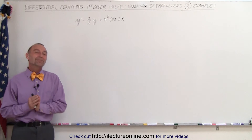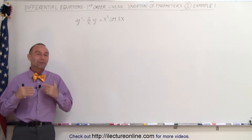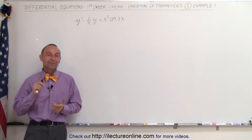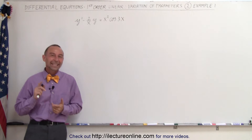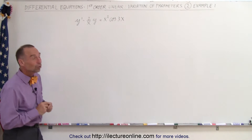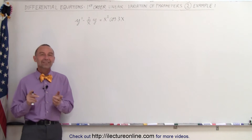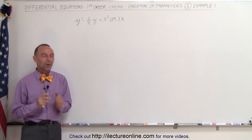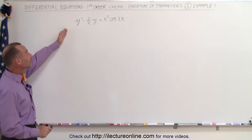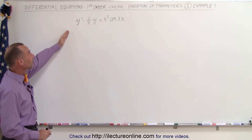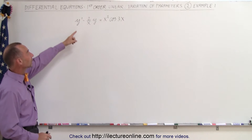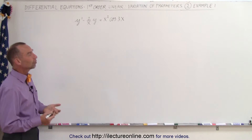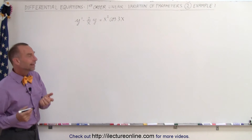Welcome to ElectronLine. Now we're going to do our first example of how to solve a first-order linear non-homogeneous equation using the method of variation of parameters. There's the equation: y' minus 2 over x times y equals x squared times the cosine of 3x.